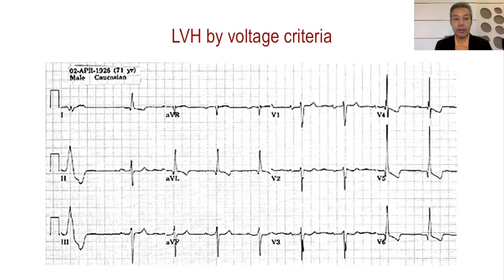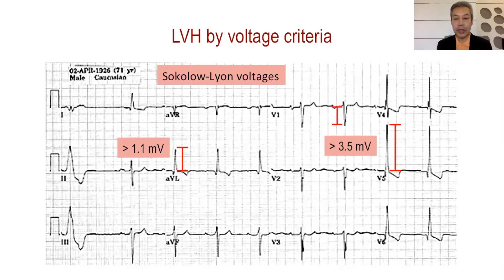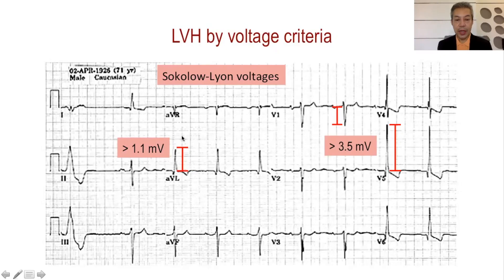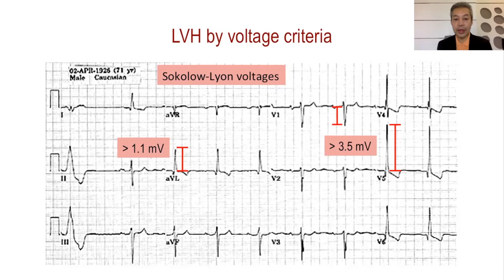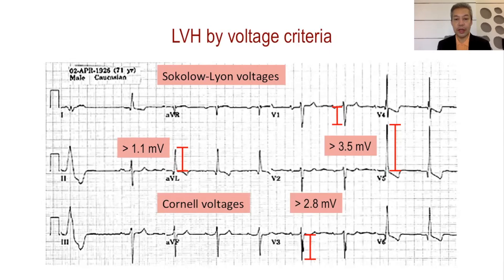Here is an example. Measuring the Sokolov-Lyon voltages — S in V1 added to R amplitude in V5 — is more than 3.5 millivolts or 35 small squares. Looking at aVL, it is around 13 small squares or 1.3 millivolts, fulfilling the Sokolov-Lyon criteria. The P wave is also wide and notched with a prominent terminal portion — left atrial abnormality. Using the Cornell voltage criteria, S in V3 added to R in aVL is 2.8, and the cutoff for a male is 2.6. So by either criteria, this ECG shows left ventricular hypertrophy by voltage criteria.